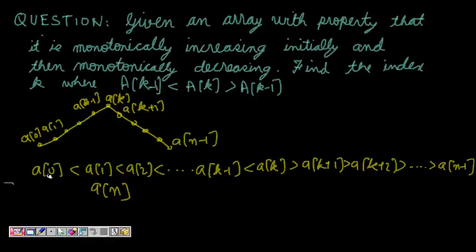What happens is that if a is the array of size n, then a[0] is less than a[1] is less than a[2] until a[k-1] is less than a[k]. This is the peak and then it again falls. a[k] is greater than a[k+1], a[k+1] is greater than a[k+2] and all these are greater than a[n-1].